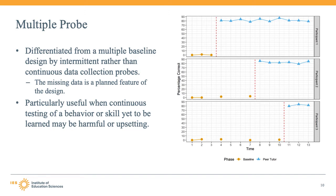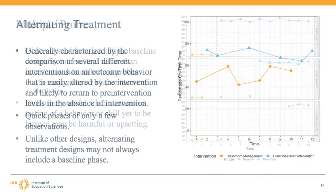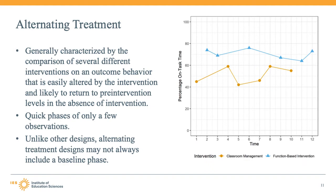Multiple probe designs are commonly used when continuous testing of a behavior or skill, which has not yet been learned, could be considered harmful or costly for the participant. So researchers intentionally plan to collect baseline data at the minimum amount necessary to establish an ongoing pattern of behavior.